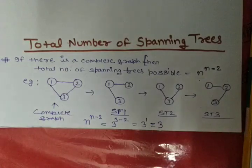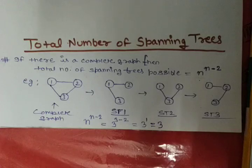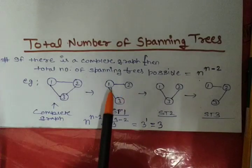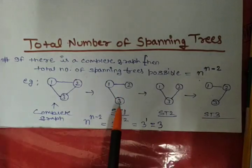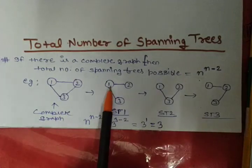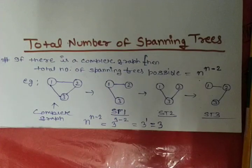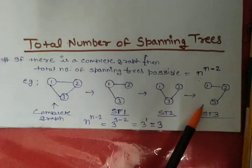If you try to construct more than 3 spanning trees, you can't construct. Because there is no other way to construct the spanning trees. So here we can reach from any node to any another node using either 1 edge or more than 1 edge. So here we can have only 3 spanning trees.